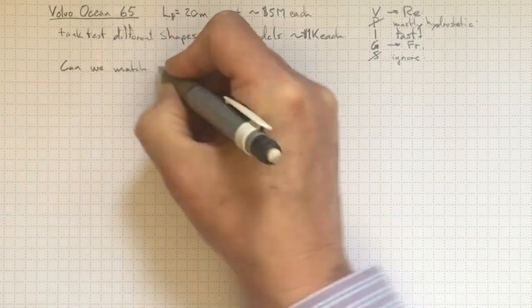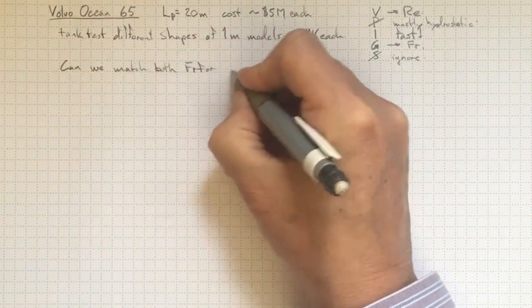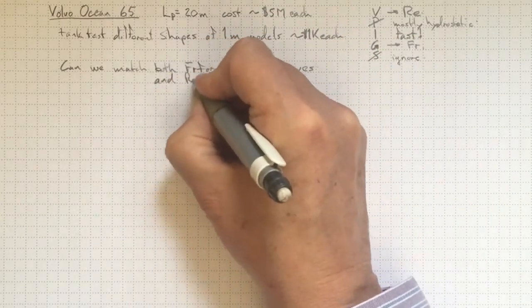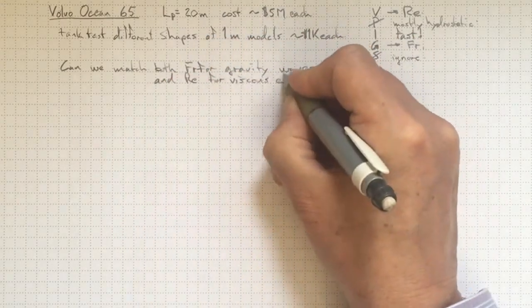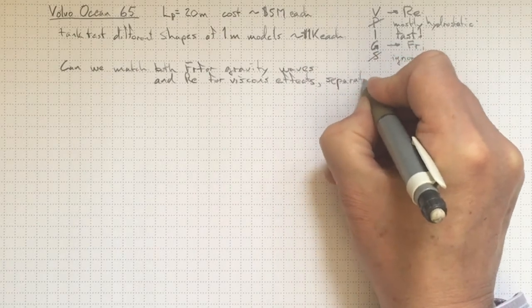So the question now is, can we match both Froude number for gravity waves and Reynolds number for viscous effects and separation, things like that in the boundary layer?